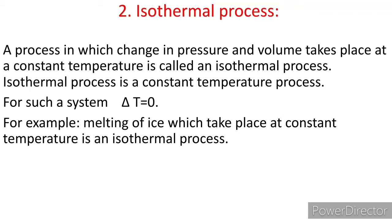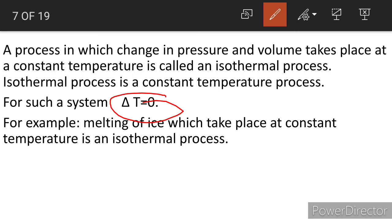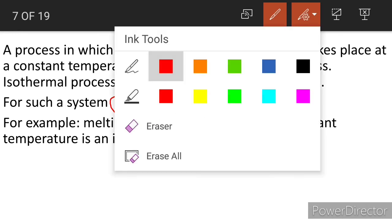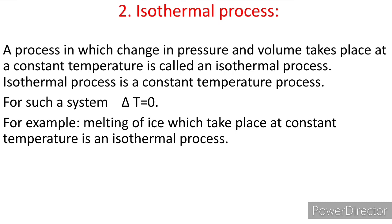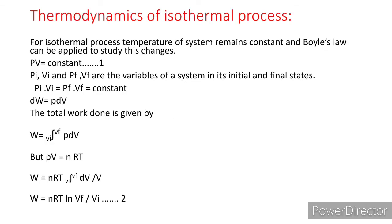The second thermodynamic process is the isothermal process. The isothermal process is a process in which a change in pressure and volume takes place at a constant temperature. For such a system, ΔT = 0. The isothermal process is also known as a constant temperature process. An example of the isothermal process is the melting of ice, which takes place at constant temperature.